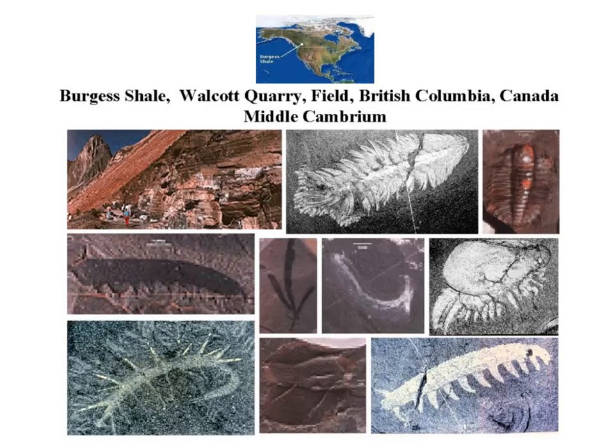The Burgess Shale is a fossil outcropping located in British Columbia, Canada. When I was a grad student, I drove right by this area, and if I had known then what I know now, we totally would have stopped. It's kind of remote — you have to get there by helicopter. What's interesting about the Burgess Shale is there are incredibly well-preserved fossils, not just hard parts like bones and shells, but soft bodies too. That's incredibly rare, which is why this area is so cherished — it tells us so much about this time period.